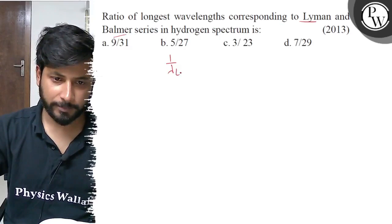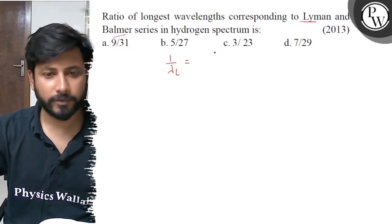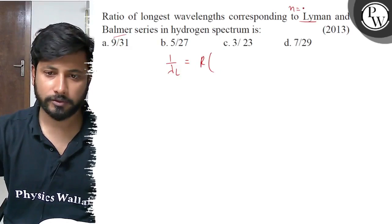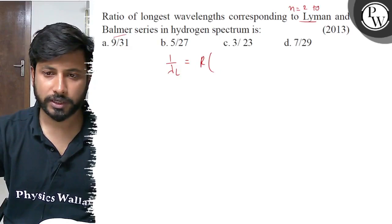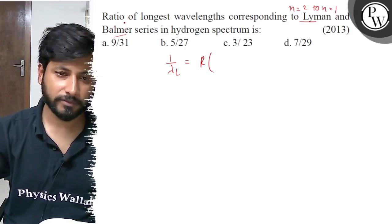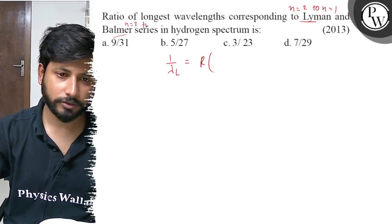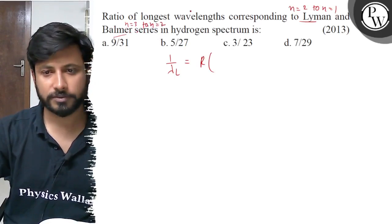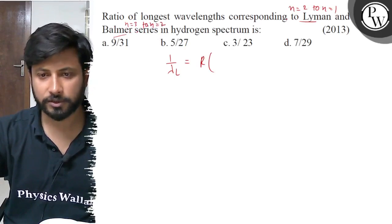So 1 by lambda. Maximum wavelength for Lyman is from n equals 2 to n equals 1. And maximum wavelength for Balmer, n equals 3 to n equals 2. So this is the energy minimum, which means lambda maximum.